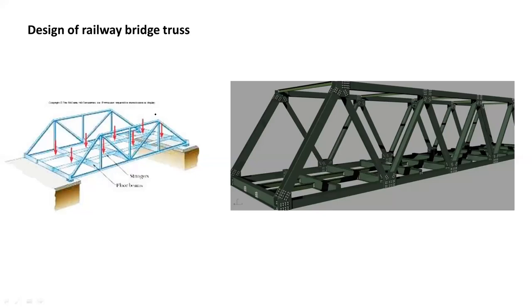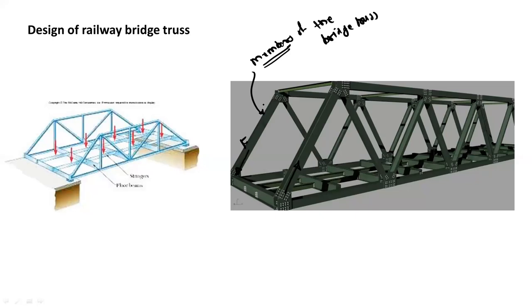When engineers design railway bridges, also called bridge trusses, they need to find out how much load, tension forces, or compressive forces will be acting on the members of the truss. Engineers also need to find out the forces acting at the joints. This is part of engineering mechanics, specifically the static part, and we will study this when we start with the actual syllabus.